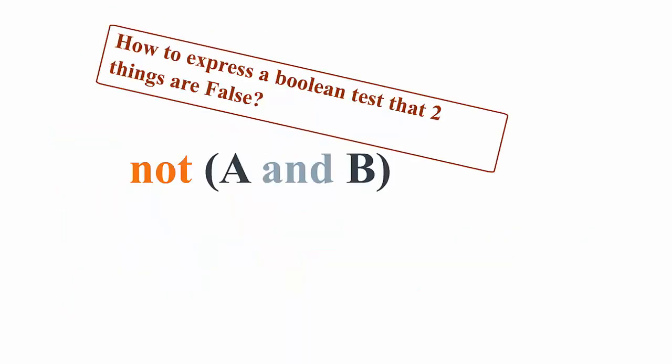Whenever you want to express a Boolean test that two things are false or true, you write: not( Boolean_1 and Boolean_2 ) — representing them as A and B, whatever they are, like is_rock_left, etc. This is the most practical takeaway you're going to need, because you'll need to sit down and write programs that do this.